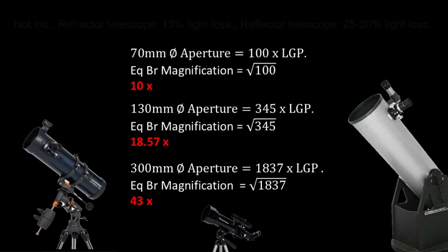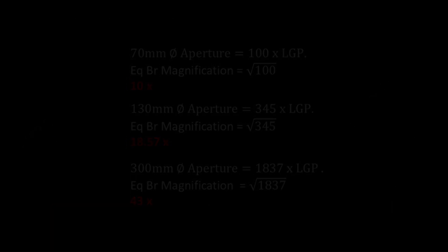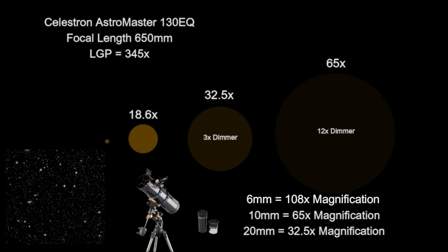Anything above this is reducing the level of light to the rods and cones of our eye. Equal brightness magnification is when a telescope's image appears as bright as what you'd see with your naked eye. Your eye's rods and cones receive the same amount of light as they would without the telescope, but see a larger image.